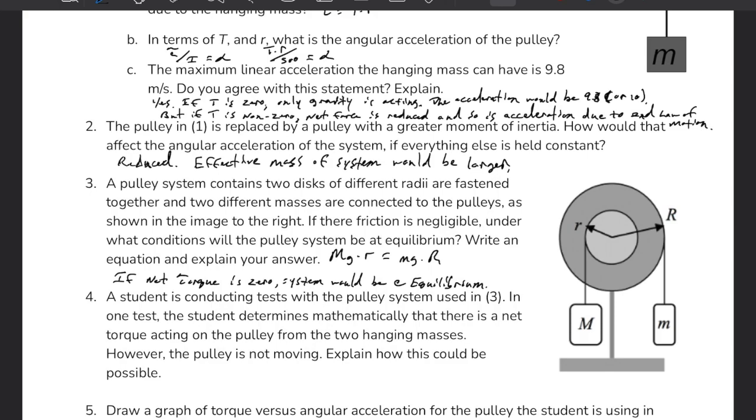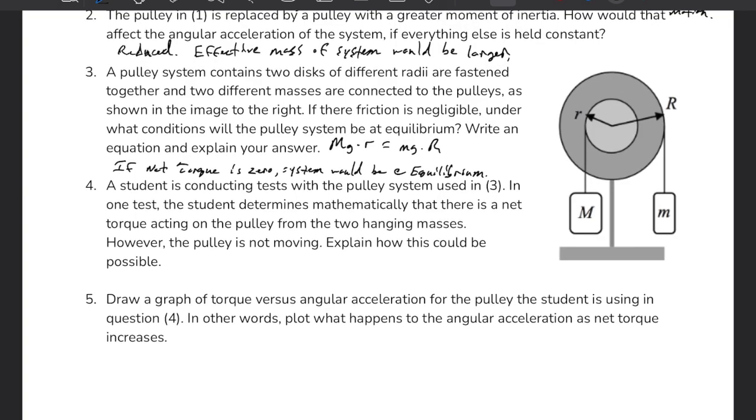A student is conducting tests with the pulley system used in number three. In one test, the student determines mathematically that there is a net torque acting on the pulley from the two hanging masses. However, the pulley's not moving. Explain how this could be.